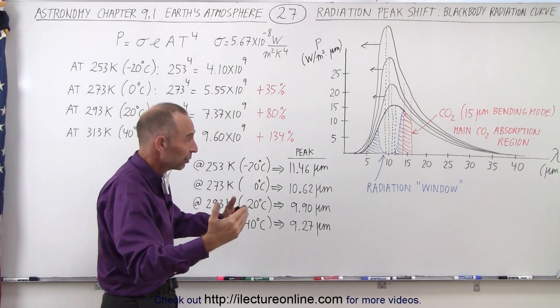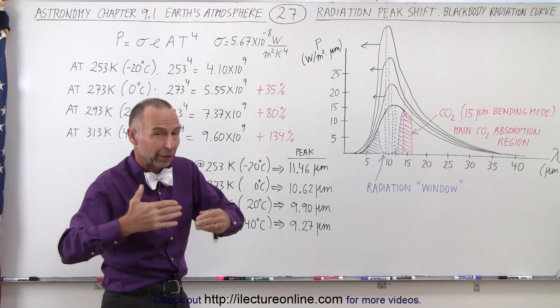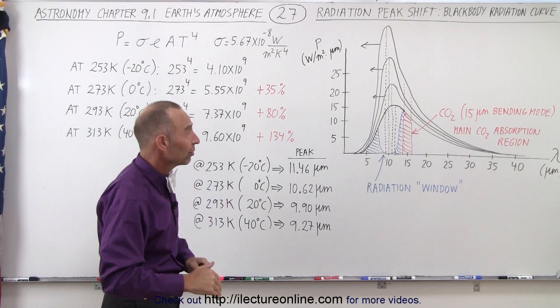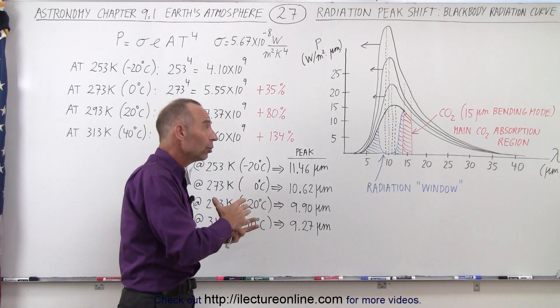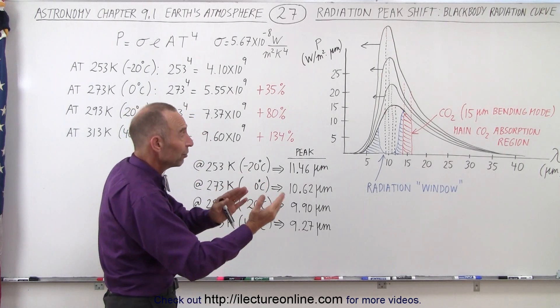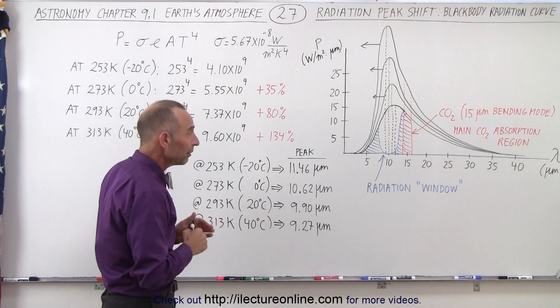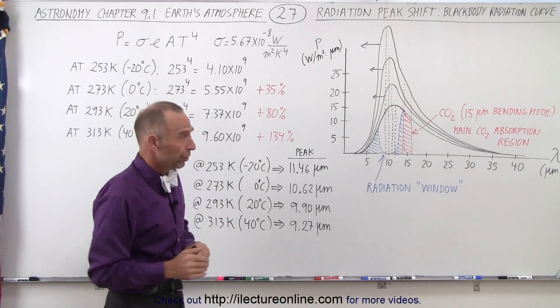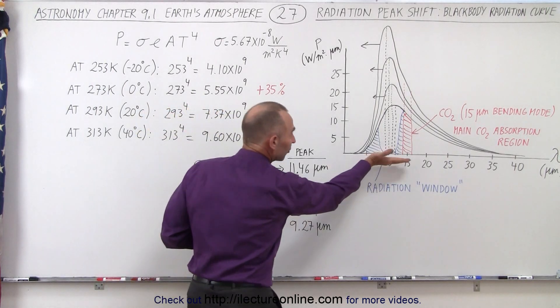It almost seems like there's this perfect thermostat that keeps us warmer when the temperatures drop to very low temperatures, and it keeps us a little bit cooler by not absorbing as much energy when the atmosphere and the surface of the earth become very hot. I should really say the surface of the earth because that's really what causes the emission.